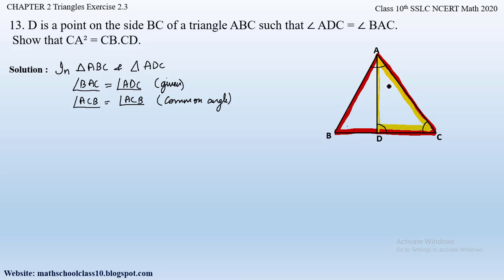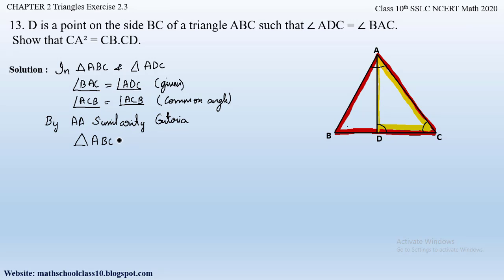Therefore we can apply the Angle-Angle similarity criterion. By AA similarity, triangle ABC is similar to triangle ADC. Since these two triangles are similar, their corresponding sides will be proportional.